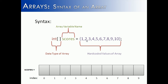Inside the curly braces, you put the values you want to store in each slot of the array. So I just did 1, 2, 3, all the way up to 10. And you can see down here, this is what it would look like in memory: 1, 2, 3, 4. The first slot, which is slot 0, will have a 1. In the second slot, you're going to have a 2, and so on and so forth.